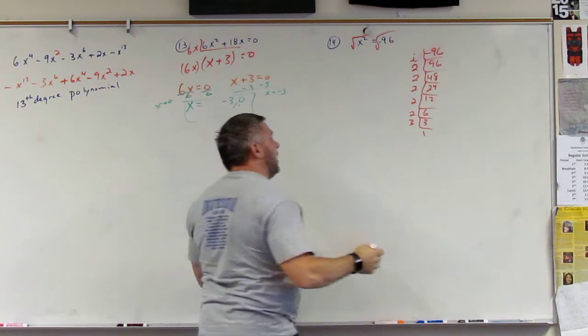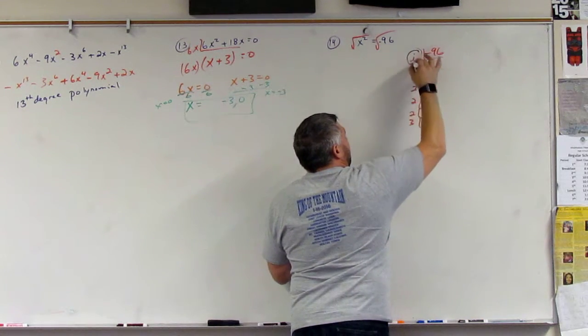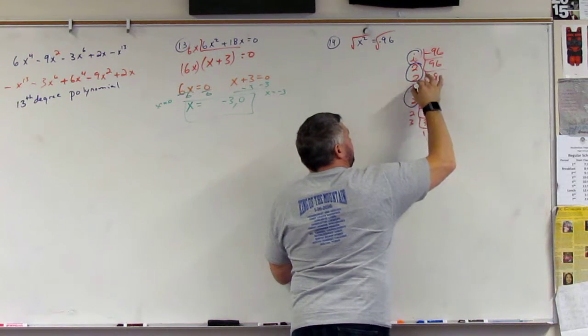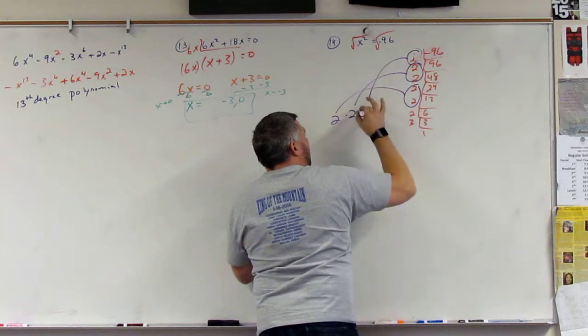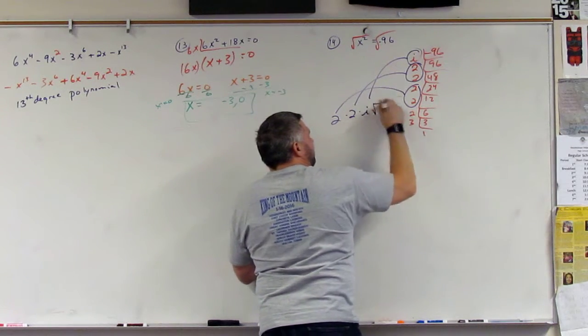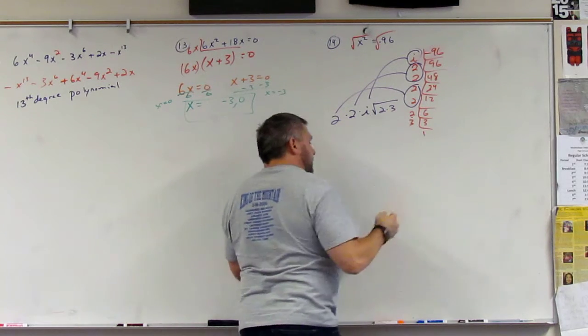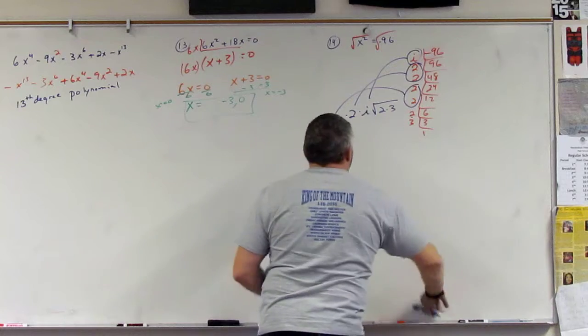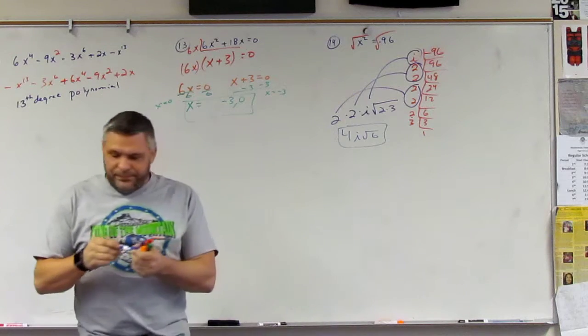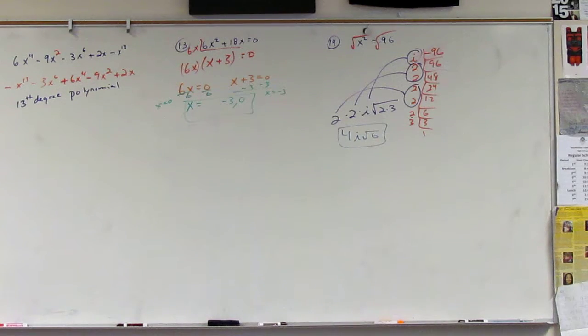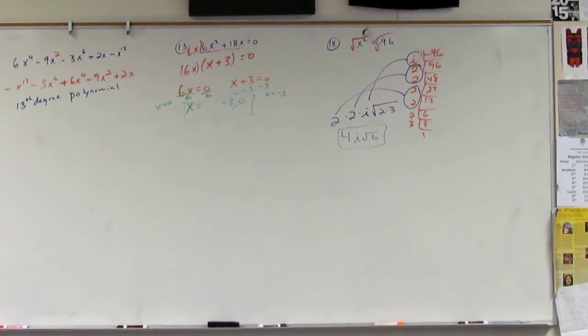All right, pull out the pairs. I is an automatic pair. Pair of twos, pair of twos. This is going to give me a 2, another 2, and an I. What's left inside is 2 times 3. So what are we left with? 4I square root 6. Bam. So you should be able to do that with an I or without an I. It's the same thing. Just one's imaginary and one's real.